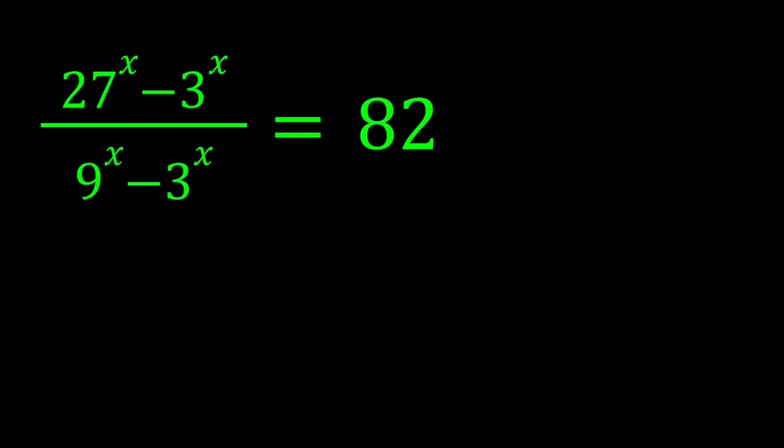Hello everyone, in this video we're going to be solving an exponential equation. We have 27 to the power x minus 3 to the power x, divided by 9 to the power x minus 3 to the power x equals 82. And we're going to be solving for x values. I'll be presenting kind of like two approaches to this. Let's get started.